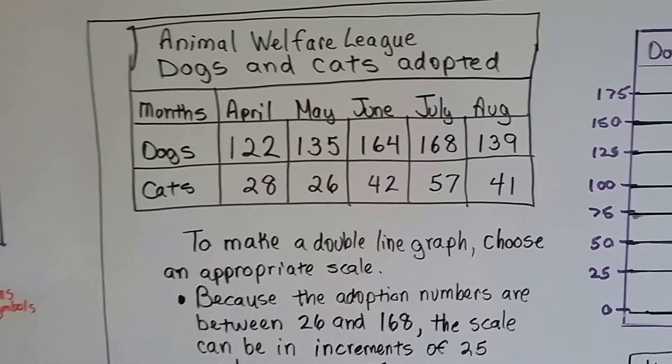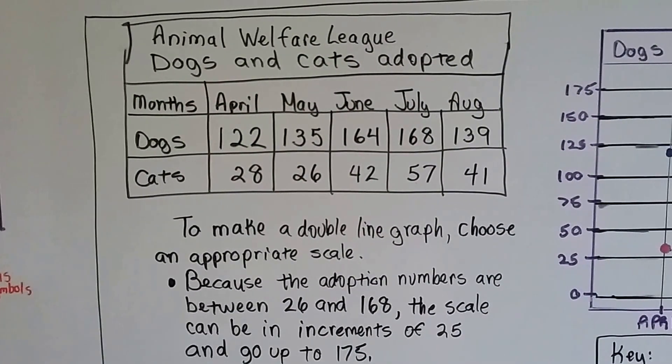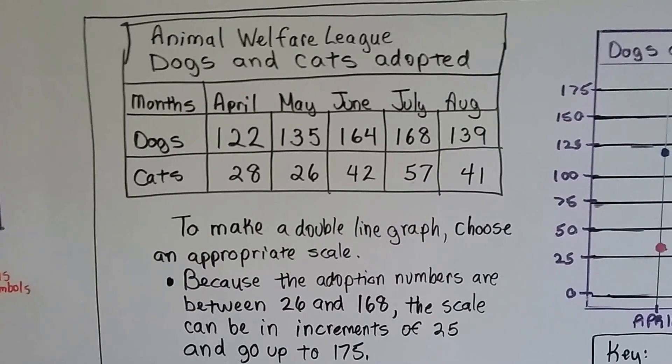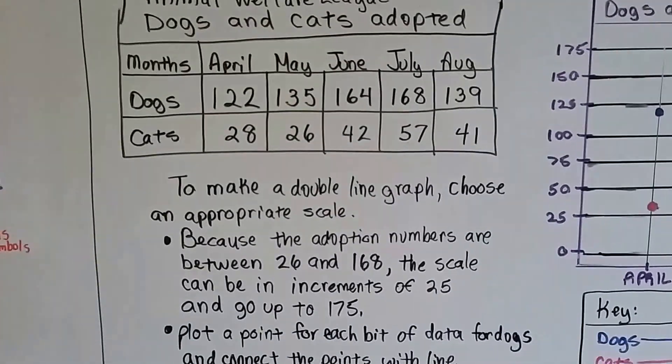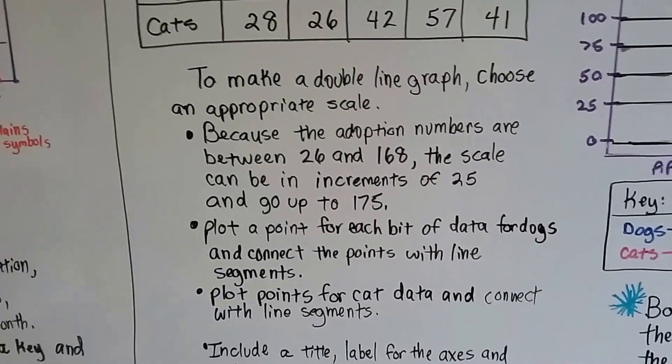The Animal Welfare League has been around since 1935 or so, and they adopt out many types of animals besides dogs and cats. So to make a double line graph, you choose an appropriate scale.